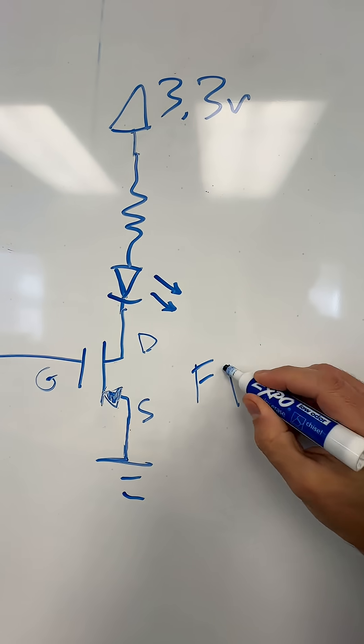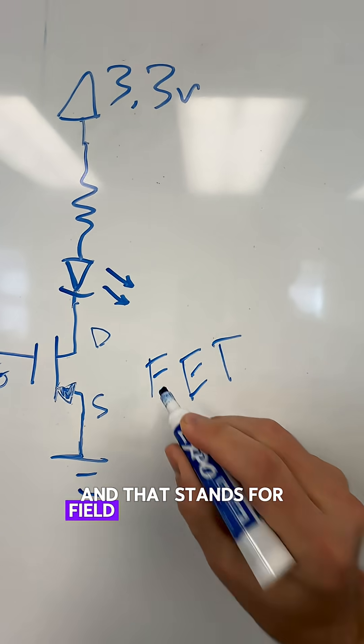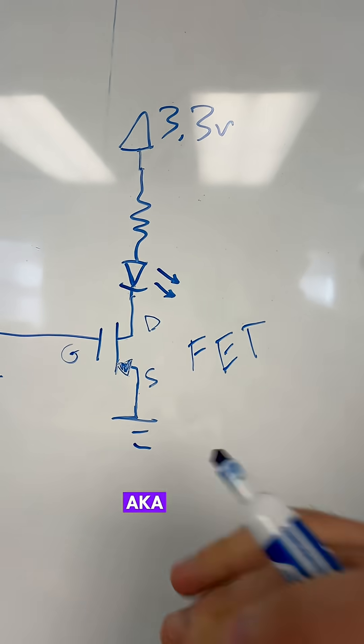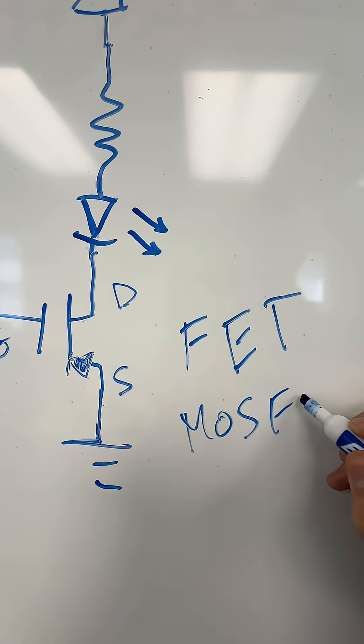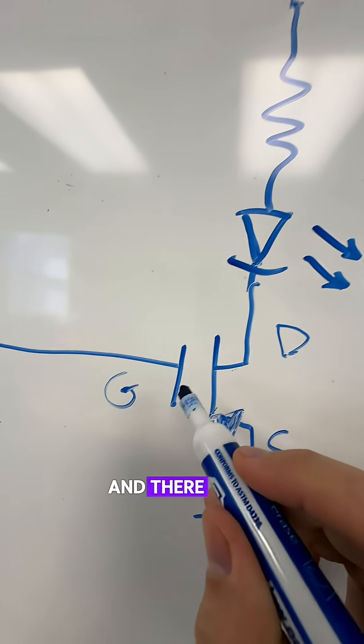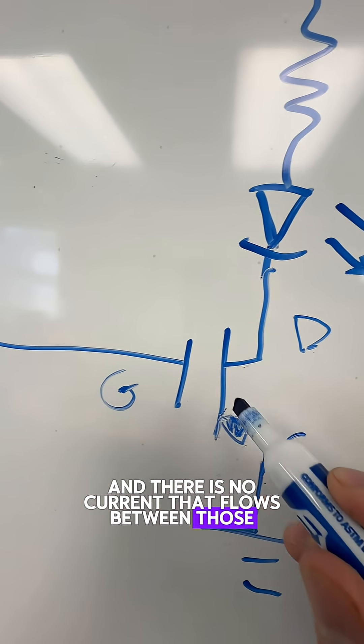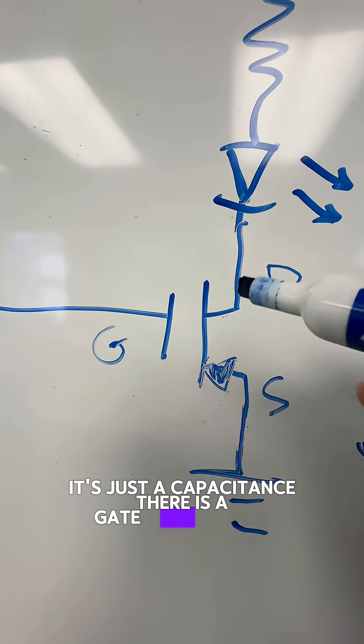This is called a FET. And that stands for Field Effect Transistor, a.k.a. MOSFET. FET or MOSFET has a gate and there is no current that flows between those. It's just a capacitance. There is a gate capacitance.